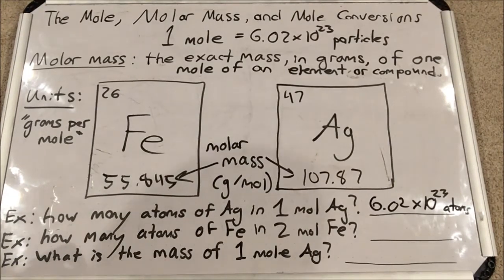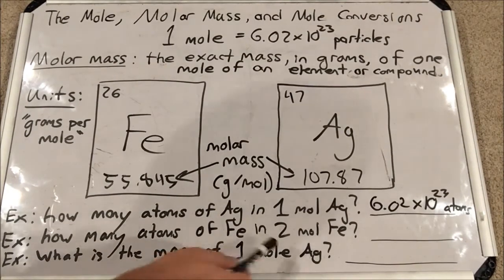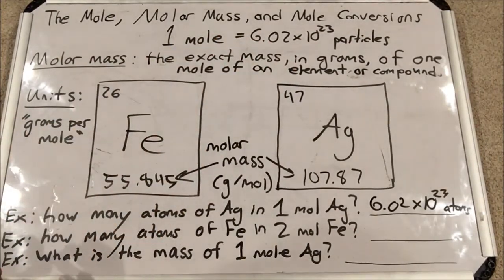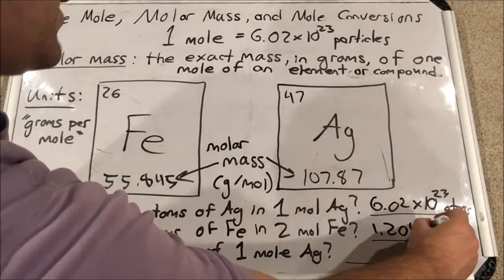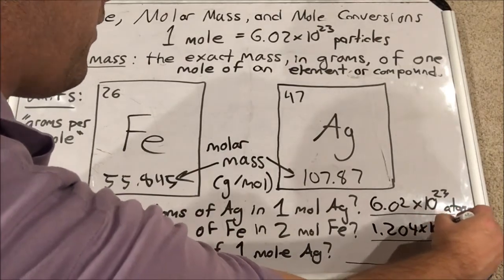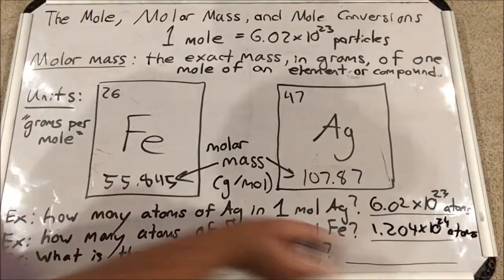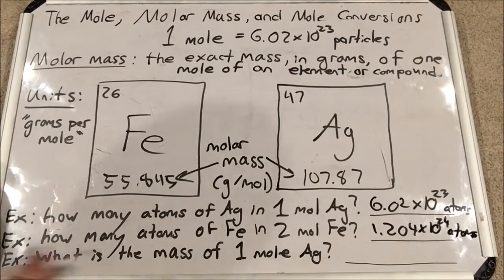Another example: how many atoms of iron are there in two moles of iron? We know one mole of anything is 6.02 times 10 to the 23. If I multiply that by 2, I would get 1.204 times 10 to the 24 atoms. So I took that mole relationship and multiplied it by 2 because I was asked how many atoms are in two moles of iron.